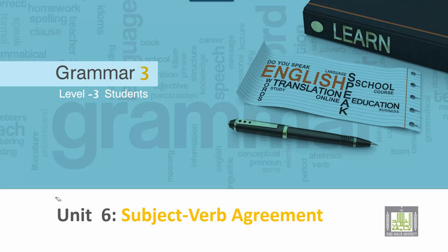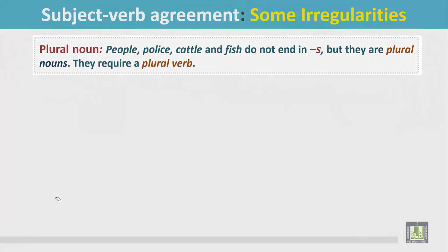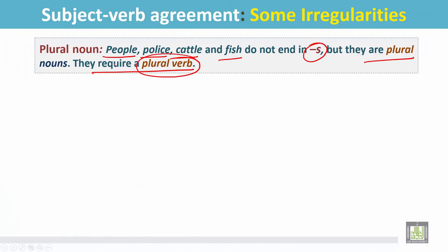Grammar 3 for level 3 students, unit 6: subject-verb agreement. Some irregular plural nouns like people, police, cattle, and fish do not end in S, but they are plural and they require a plural verb.